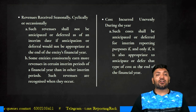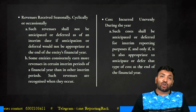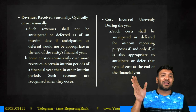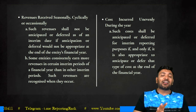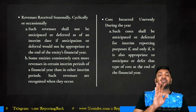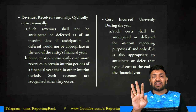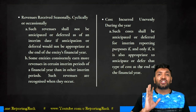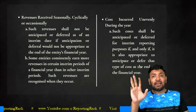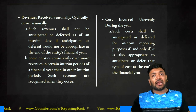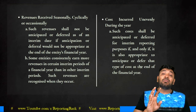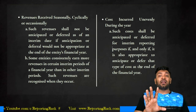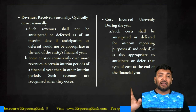Revenues received seasonally or cyclically should not be anticipated or deferred across the year — they must be recognized in the period in which they arise. The same applies to costs: if a cost cannot be anticipated or deferred — such as insurance premiums which can be spread evenly over interim periods — it should not be allocated across different interim periods.